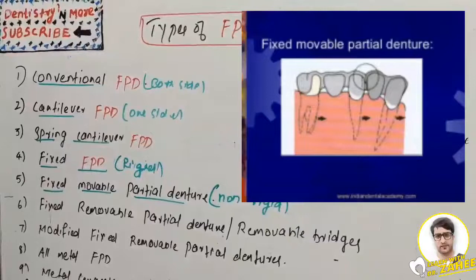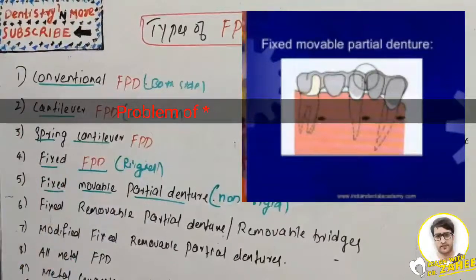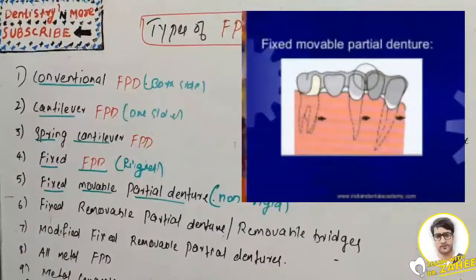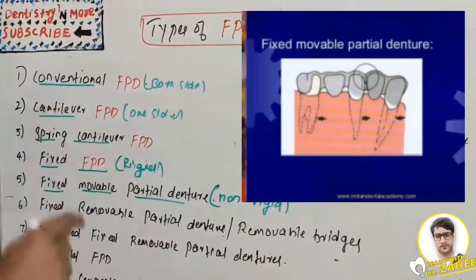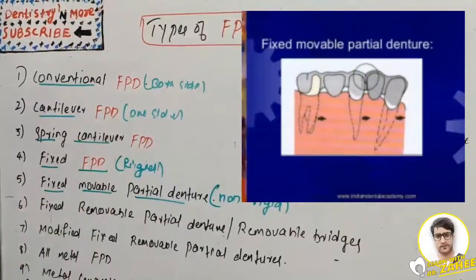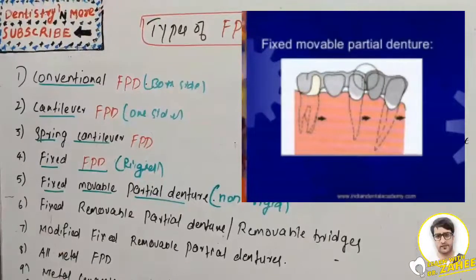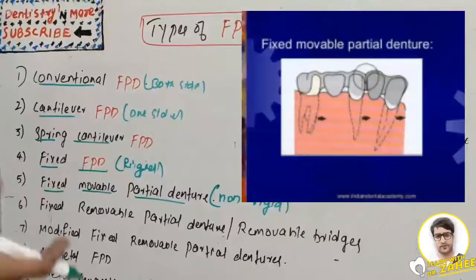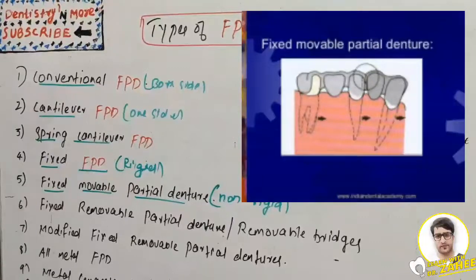The advantages of fixed-movable partial denture: they act as stress breakers while transmitting unwanted leverage forces, the abutment is pressurized only during occlusal loading improving abutment health, tooth preparation need not be parallel — each abutment can be prepared independently, and it allows minor movements between components. The problems: the design is complex, prefabricated connector components are expensive, difficult to maintain, mobile parts wear out under constant use, cannot be used for long span bridges, lab procedures are complicated, and temporization is difficult.